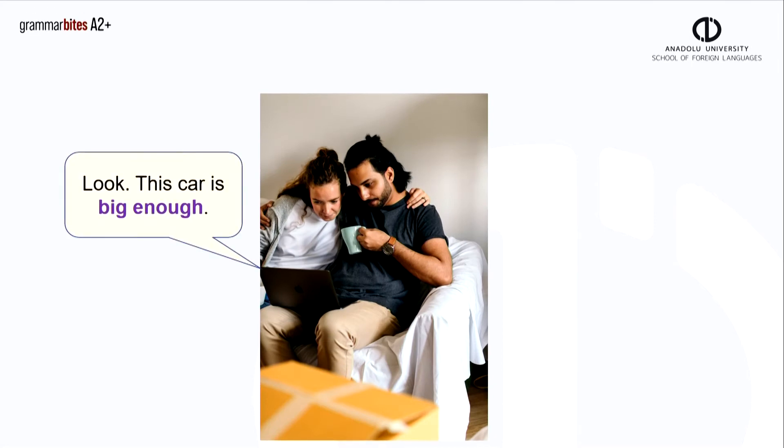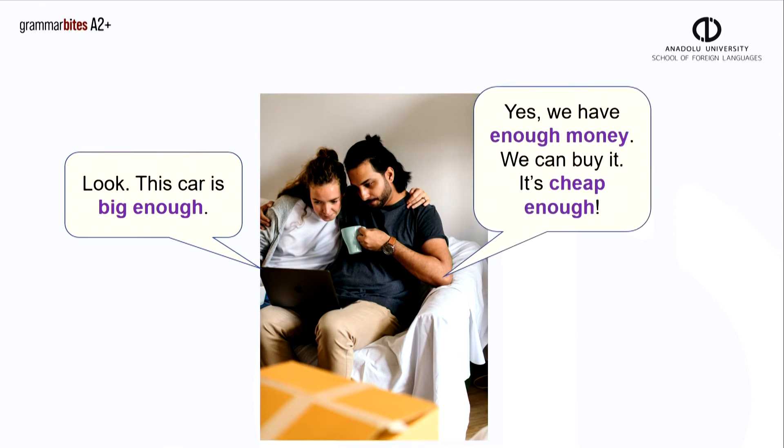Look, this car is big enough. The size of the car is the right amount. The adjective big is before the word enough. He replies, yes, we have enough money to buy it. It's cheap enough. The noun money is after enough. They have the right amount of money to buy the car.